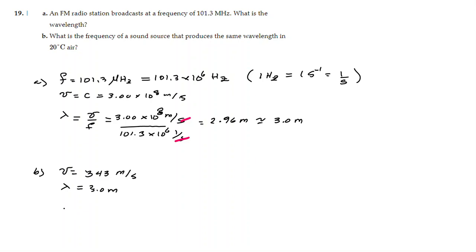Now we are ready to calculate the frequency of this sound wave. The frequency will be the ratio between the speed of the wave and its wavelength. So it will be 343 meters per second divided by 3.0 meters. The meters cancel out, the unit will be 1 over second, and 1 over second is Hz, so we are going to get approximately 114 Hz.